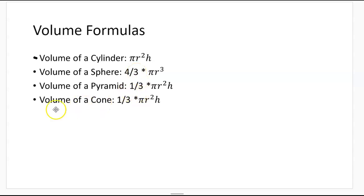The volume of a pyramid is also the same as the volume of a cone, which is 1/3 times πr²h. We have this 1/3 here because the pyramid is 1/3 of a cube and a cone is 1/3 of a sphere.